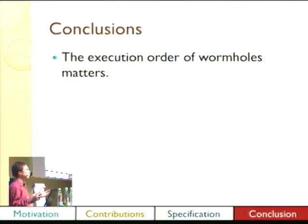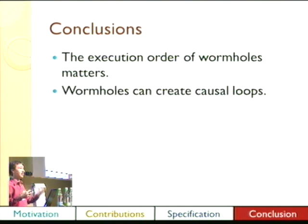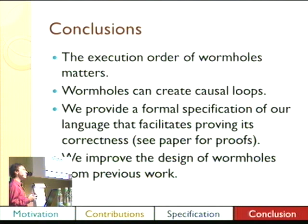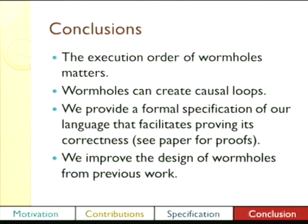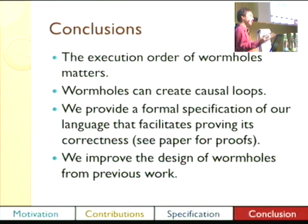In conclusion, one of the central ideas behind wormholes is that execution order matters: you need to do the white hole reads during the time step and the black hole writes afterwards to get this causal connection. That causal connection lets you make causal loops, which provides a lot of power. We provide a formal specification of our language to facilitate proving its correctness, and we have those proofs in the paper. We introduced wormholes in a previous paper as a side thing, and here we expand on that, improving the design to make them easier to use, safer, and easier to reason about.